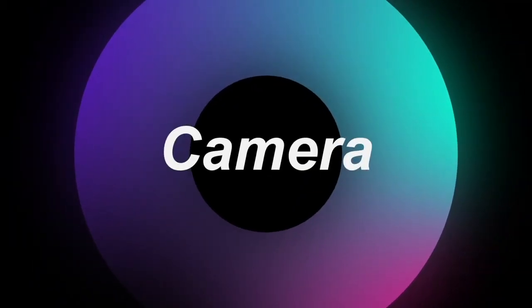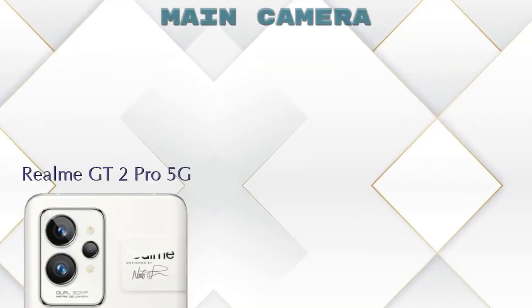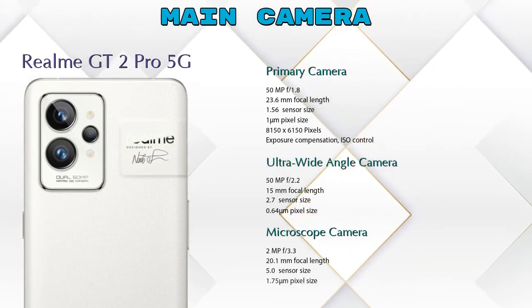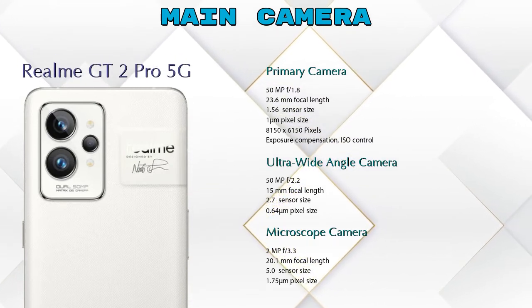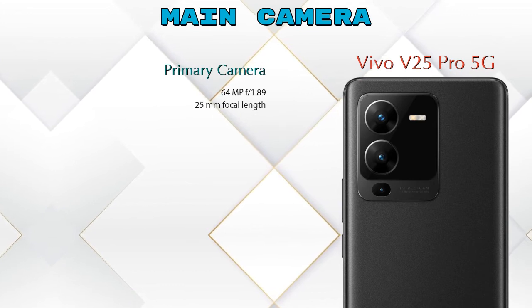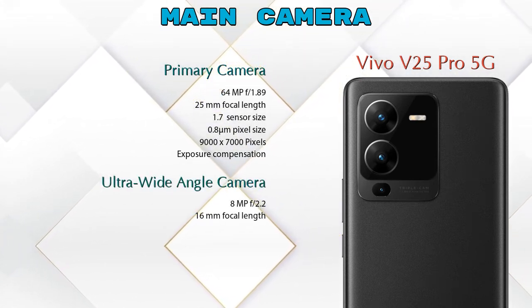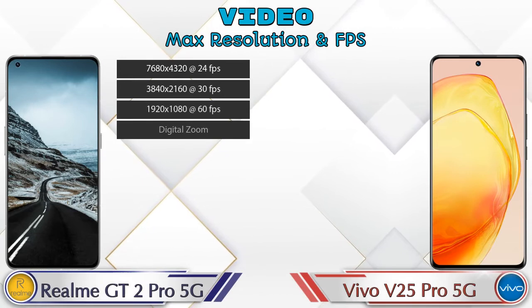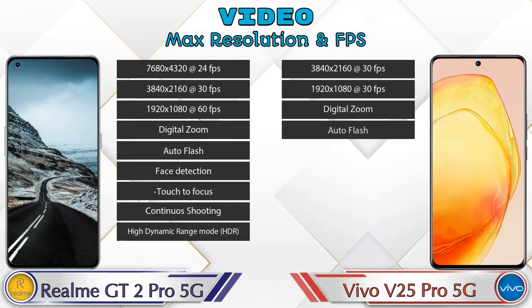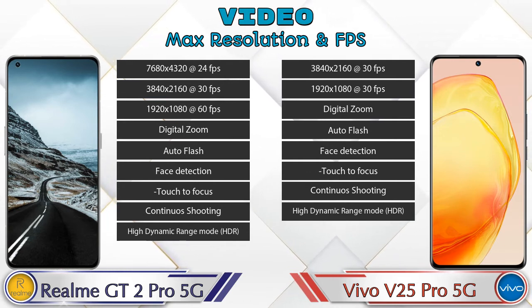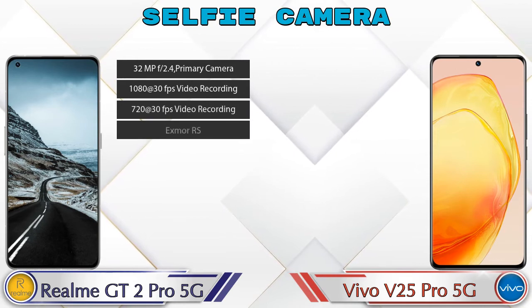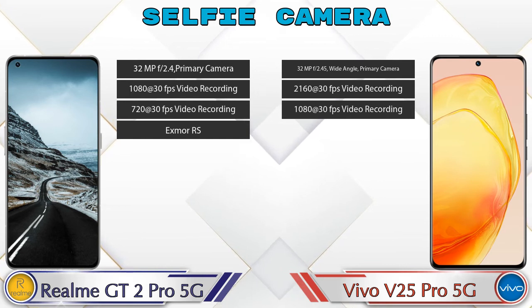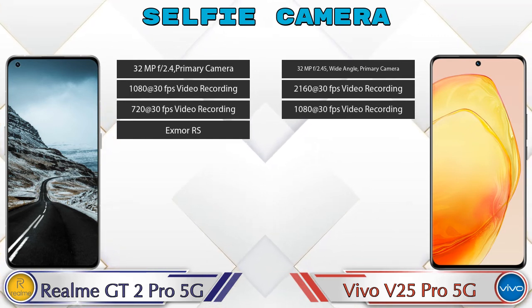Now let's talk about cameras. The GT2 Pro has three rear cameras: a primary camera, an ultra-wide angle camera, and a microscope camera. The V25 Pro 5G also has three rear cameras: a primary camera, an ultra-wide angle camera, and a macro camera. For video, the GT2 Pro has nine different feature options and the V25 Pro 5G has eight. Both phones have a single front selfie camera; the GT2 Pro's has four features and the V25 Pro 5G's has three.